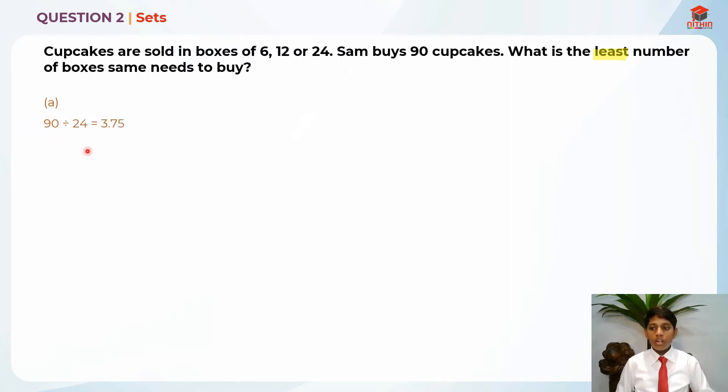90 divided by 24 is equal to 3.75. Why do we do that? Because we are going to take the largest number because we want the least number of boxes.